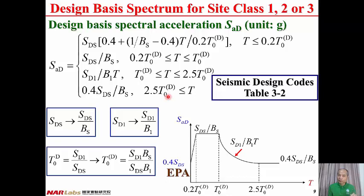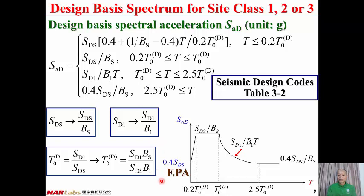When the damping ratio equals 5%, BS is assigned to be 1 and B1 equals 1, and the general equation reduces to the special equation for damping ratio equal to 5%. There is one more observation: no matter what the damping ratio is, the EPA — effective peak ground acceleration — always equals 0.4 SDS. It has nothing to do with the damping ratio.